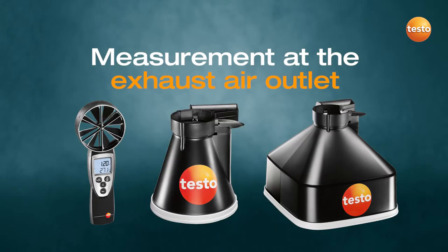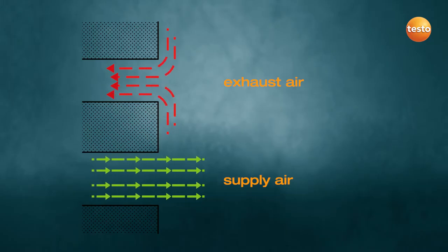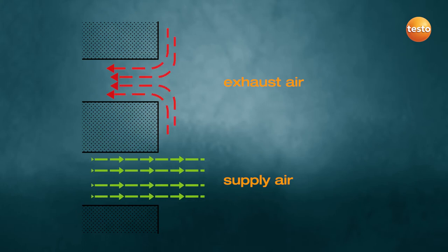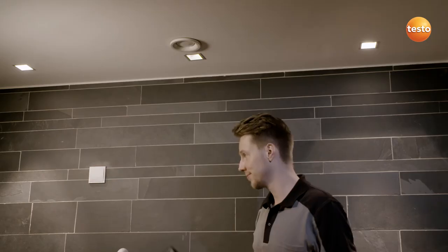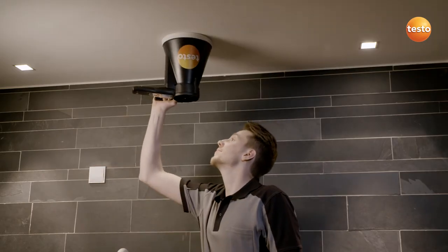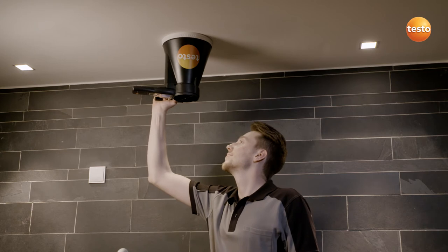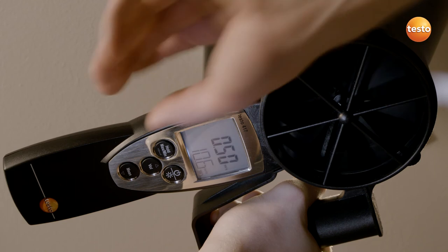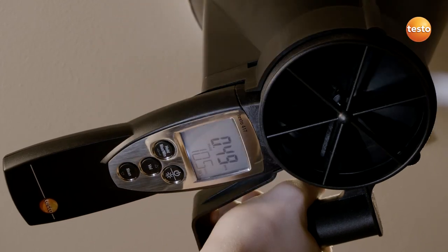This is how you measure properly at the exhaust air outlet. A funnel is required to measure the exhaust air. There is no directed flow profile available for exhaust air as the air is sucked in funnel-like from the room, meaning there is no definable area in the room via which the volume flow can be determined. This challenge is easily solved with the Testo 417 funnel, because it creates defined flow conditions at some distance from the plate outlet in a fixed cross section.